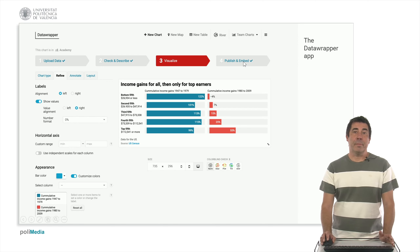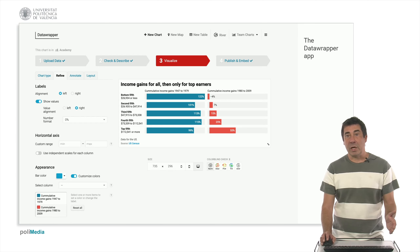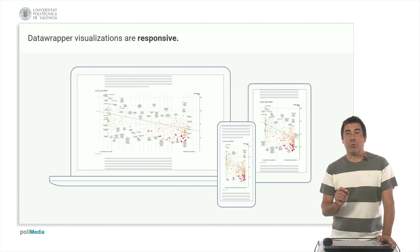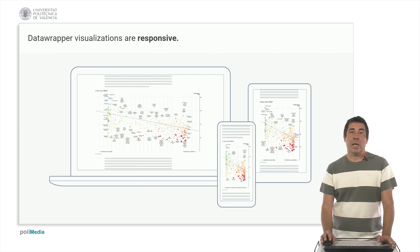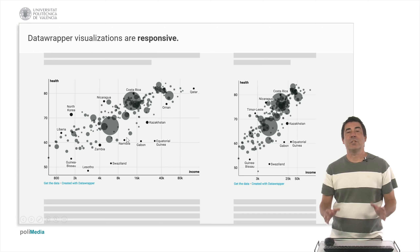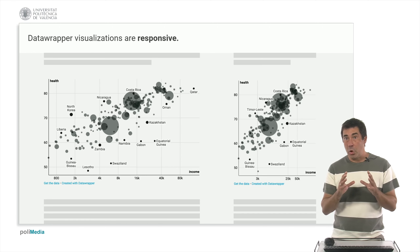The fourth and last step is to publish or embed — either if you want to extract an image or place the visualization into a website. One important thing about Datawrapper concerning export formats for data visualization on the web and on devices is that it is responsive. As you can see, a graph can be viewed on different devices such as a laptop, a cell phone, or a tablet — and it's not just rescaling the image to make it smaller to fit the screen.